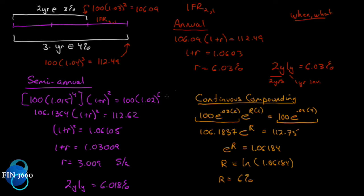Look at what happens as we move from annual (6.03%) to semi-annual (6.018%) — we could also do quarterly and monthly — and in the limit, with continuous compounding, the implied forward rate converges to exactly six percent. That's important: now that we've taken this long way around, we can see that the continuously compounded implied forward rate limits to a specific value, so we can use a much simpler derivation if we know it's the end result of that limit.